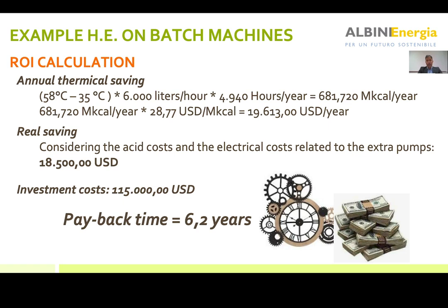This is an example of what you can do with batch machines, which is normally more costly if you compare it with a continuous machine, because you need to install some infrastructure with all the collection tanks I showed you before. When you go to a continuous machine, the investment cost drops and normally the payback time drops as well because the infrastructure is no longer necessary.